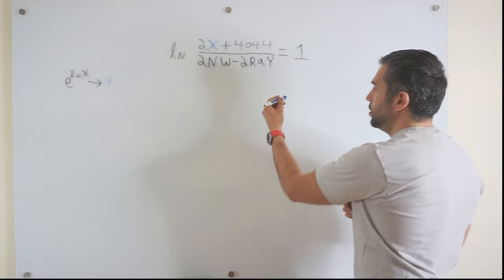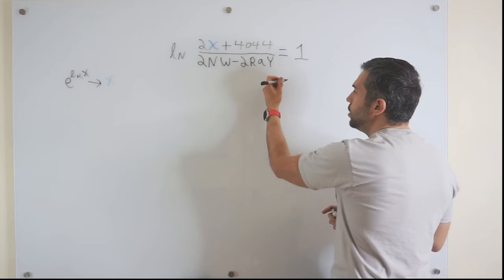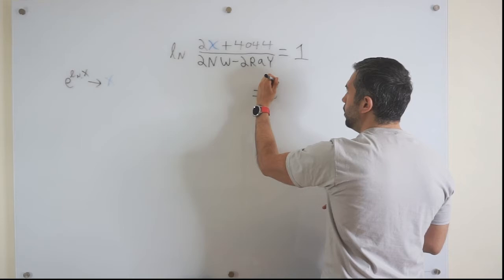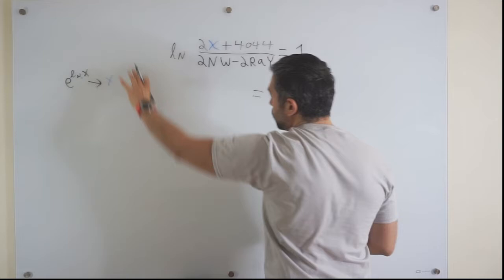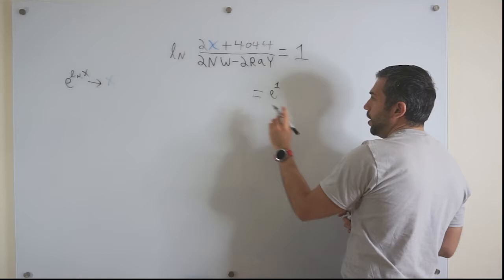But today we're just using e. So what happens is that when you take e as the base, and convert this into an exponential equation, you will get e to the power of 1. So this is the right side. We took e, and when we do that, we cancel out the ln, but we're also going to multiply the 3nw minus 3ray and put it back to this side, because if you divide by it, you can multiply it.